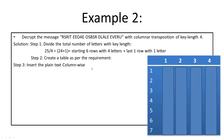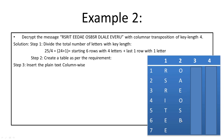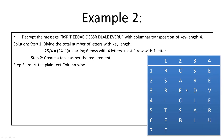We insert the text column-wise for decryption. The first column has seven letters because the last row has one letter: R S R I T E E. The second column has six letters because the last row has only one letter — remember — so the second column gets O A E O S V. The third column gets S R D L A L, and the final column gets E E V E R E.